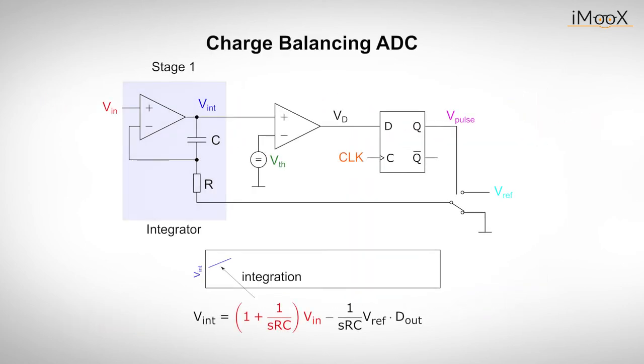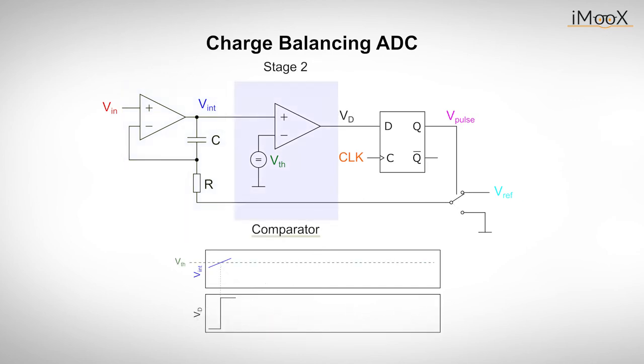Now, let's take a look on what the corresponding circuit looks like. The first stage is an operational amplifier that serves as an integrator for the input voltage. At the beginning the output is low, so the integration process starts and the integrated input voltage Vint increases. The next stage consists of a comparator that compares Vint with a threshold voltage. The output D of the comparator is low until Vint has exceeded the threshold voltage.